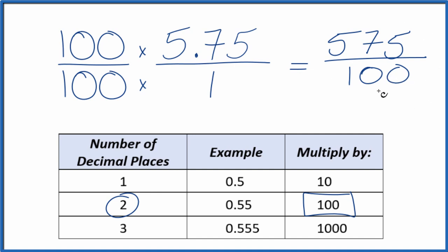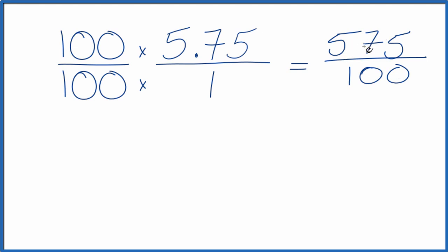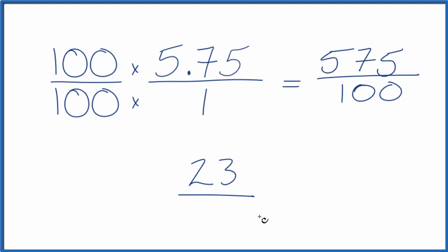We can reduce this though — it's not in simplest terms yet. So 25 goes into 575 and into 100 evenly. 575 divided by 25 gives us 23, and 100 divided by 25 gives us 4. So 5.75 as a fraction is 23 over 4.